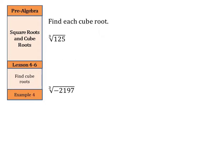Now, cube roots. If square roots are a number times itself equals the number inside the square root, a cube root — well, the 3 is a giveaway — one number times itself times itself equals the number inside the cube root. For 125, using some estimation strategies: 2 times 2 times 2 is 8, so that's way too small.